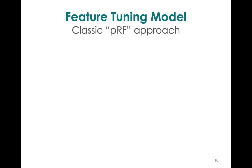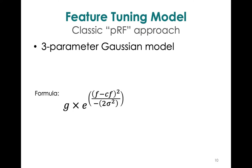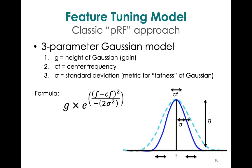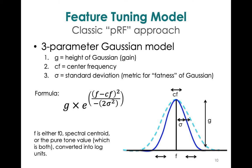We used encoding models to explore the topographic representations of pure tones, fundamental frequency, and spectral centroid. We started with a three-parameter feature tuning model, which has the gain or height of the Gaussian, the center frequency, and the standard deviation or fatness of the Gaussian. F is what we're feeding into the model — either fundamental frequency, spectral centroid, or the pure tone frequency value — so it's essentially three models in one since we fit each condition separately.